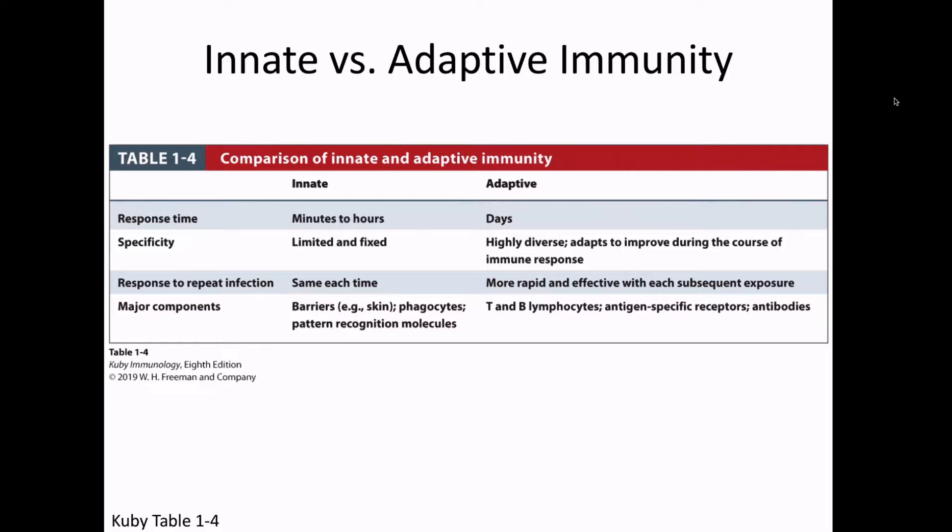There are also big differences in specificity. The innate immune response has more limited and fixed specificity, whereas the adaptive immune response has a more diverse type of specificity. The innate immune response is the same each time you are infected, whereas the adaptive response improves with different exposures to the same pathogen — that is called memory. Memory and diversity are really the two defining factors of the adaptive immune system.